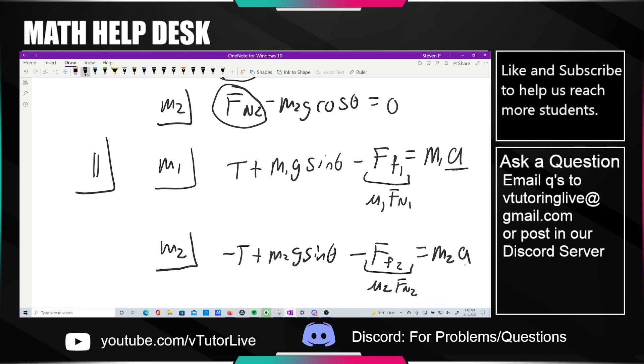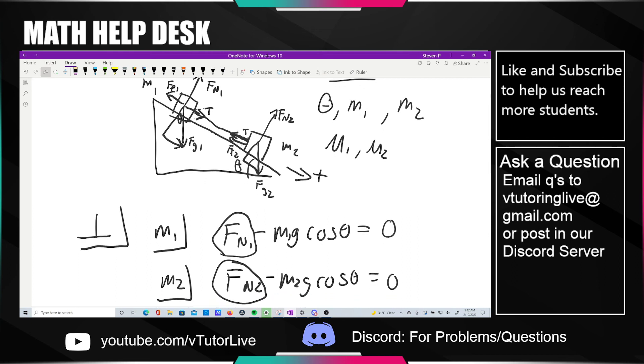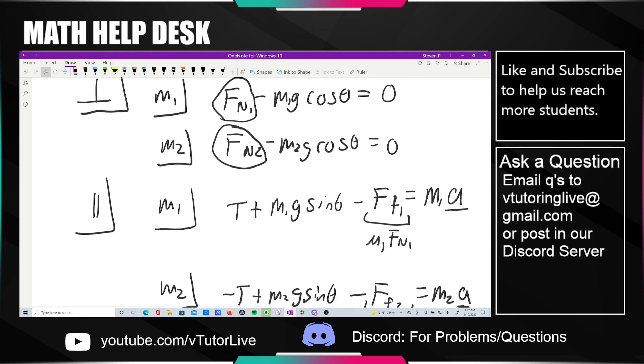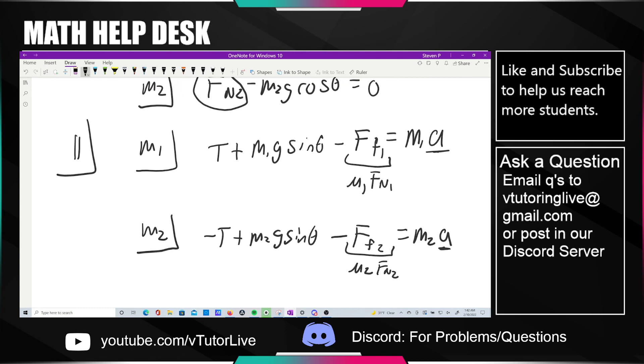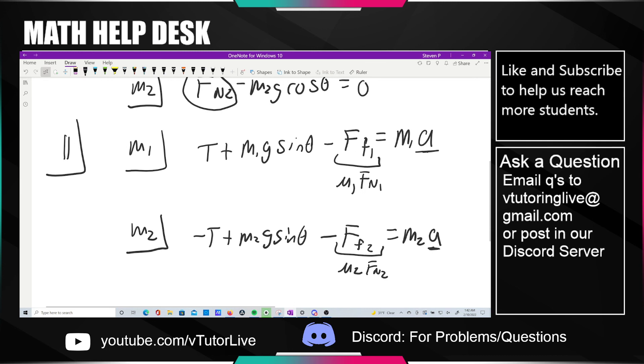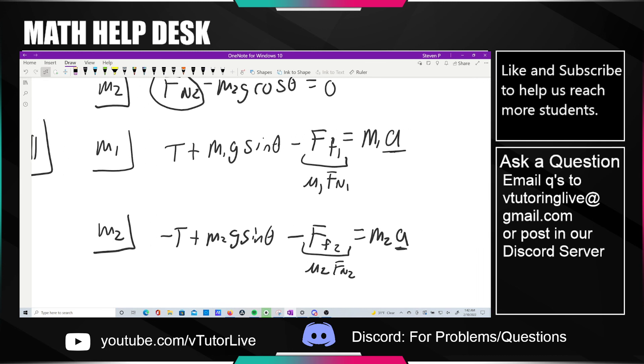And remember that these are going to be the same a, and that's one of our crucial assumptions about the problem, because the rod is given to be incompressible and taut. Right? It's just like a solid rod that connects them together. So if they're moving in lockstep, that means they're also accelerating in lockstep. Right? Because acceleration is just the second derivative of position.